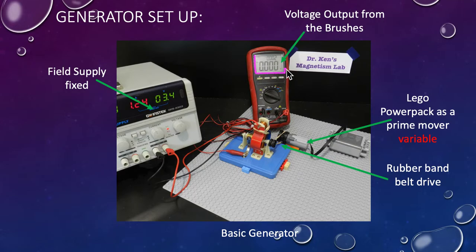Then I have a voltmeter showing DC volts here on my multimeter. I've got a Lego generator here with a pulley system with my rubber band. I've got a battery pack here to operate my Lego motor. The Lego power pack is my prime mover. I'm calling it prime mover variable because I'm going to use different size pulleys to get different speeds. My rubber band drive is just a rubber band and there's my basic generator. I'm going to get different speeds by changing the pulley size.